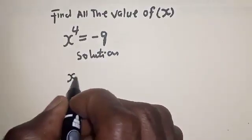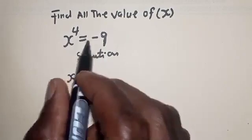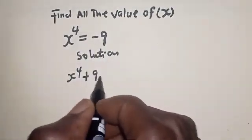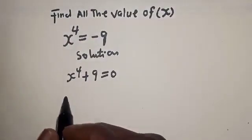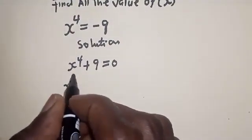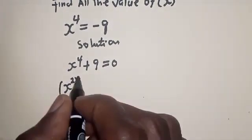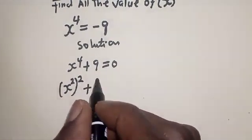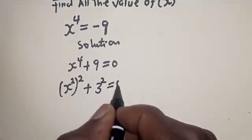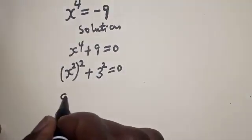We have x raised to power 4, then if minus 9 comes to the other side it becomes plus 9 is equal to zero. Now x raised to power 4 can be written as (x²)², and plus 9 can be written as 3² is equal to zero.